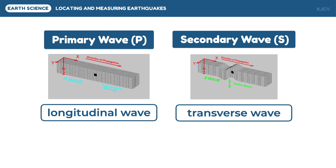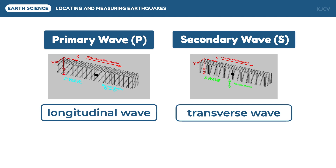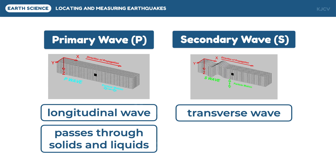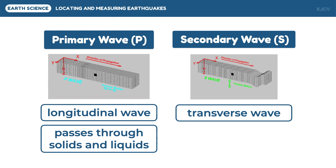Another important point of difference for the two types of body waves is the medium of propagation. Primary waves can pass through solid and liquid regions of the earth's interior. This means that these waves pass through both the mantle and core, but are slowed and refracted at the discontinuities.